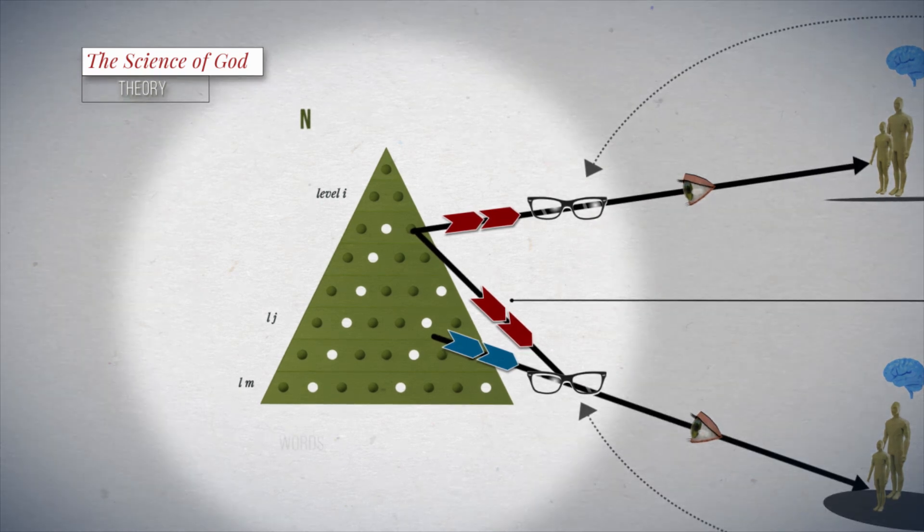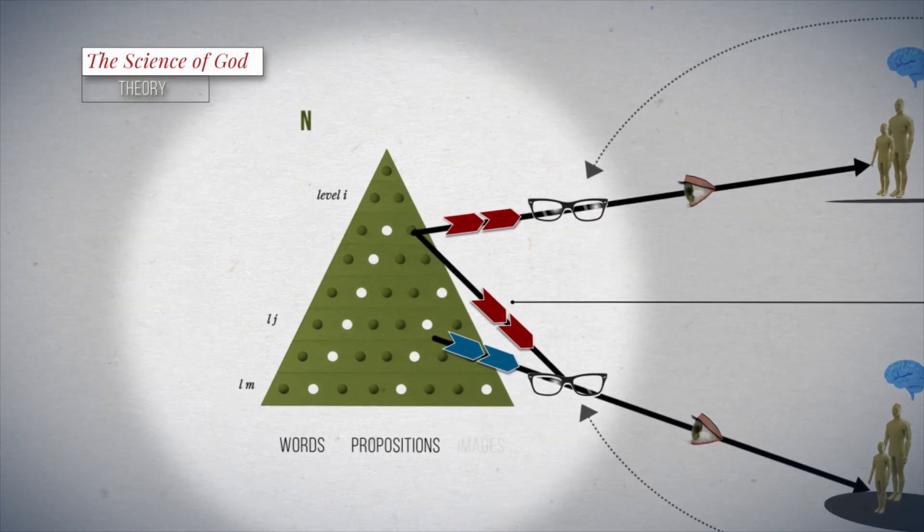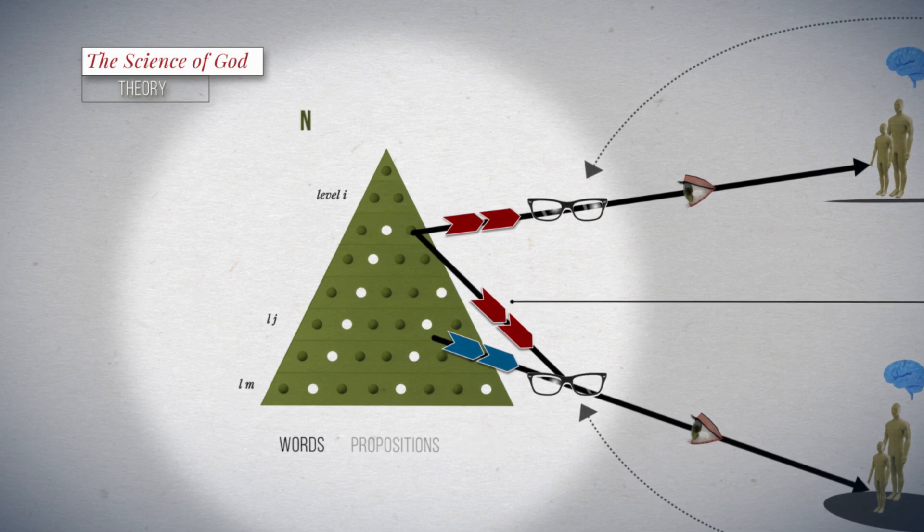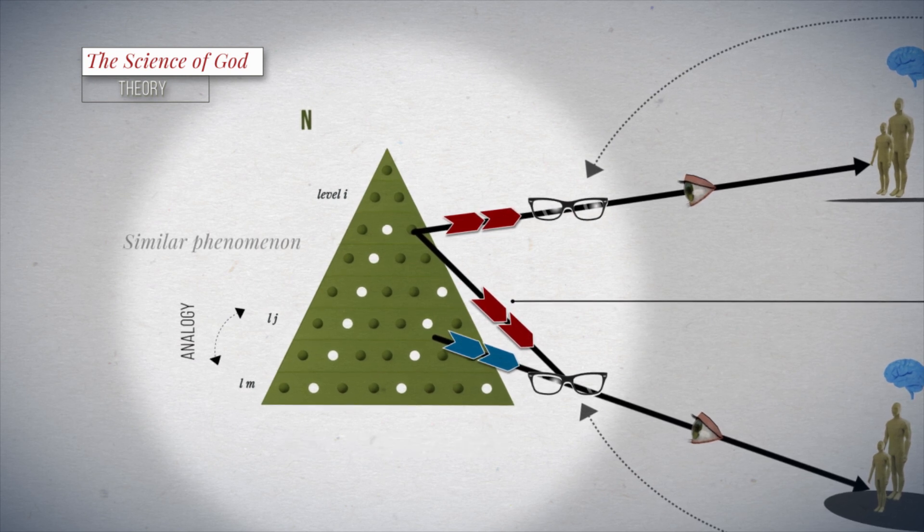This modeling is done through words, propositions, and or images, and a phenomenon of one level of reality may be represented to a certain extent by analogy to similar phenomena of another level.